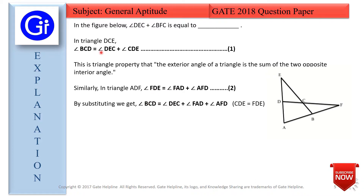Now we substitute. We consider the first statement: angle BCD equals angle DEC plus angle CDE. Angle CDE equals angle FDE because both these angles are the same. So in place of CDE we replace the value from the second statement, FDE. So the value of CDE is replaced by the sum of angle FAD plus angle AFD.